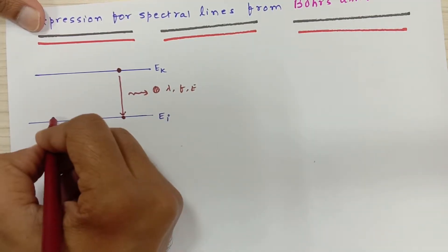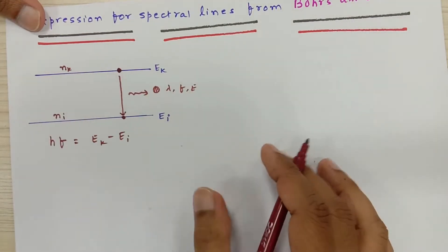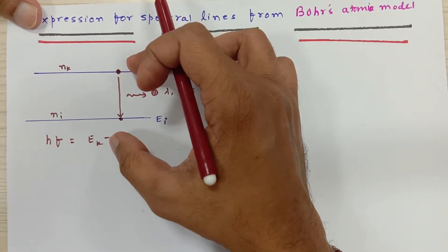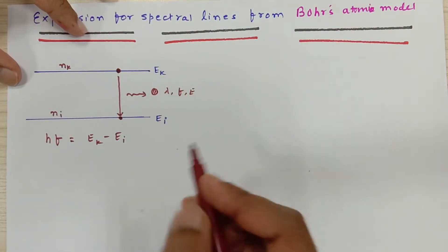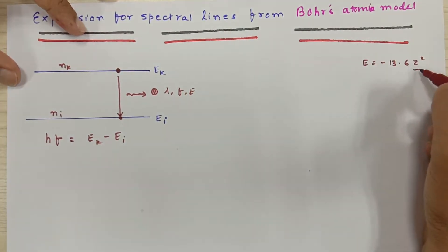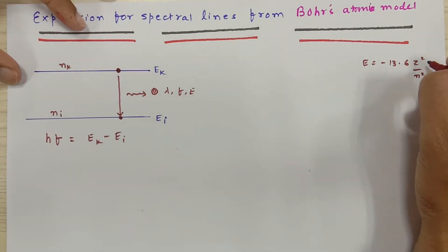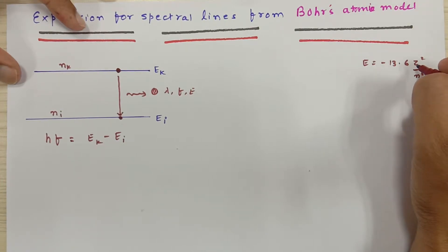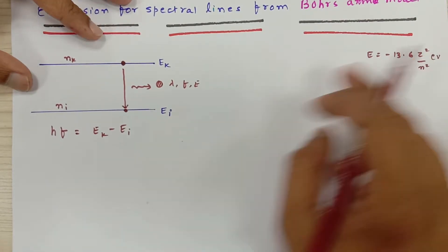Ei is the energy of the ith orbit and Ek is the energy of the Nkth orbit. The electron falls down, and due to this transition a single photon of energy equal to the difference in the orbit energies is released. Now we know the energy expression is equal to minus 13.6 Z² upon N², which is the energy of the electron in the nth orbit for atomic number Z, measured in electron volts.